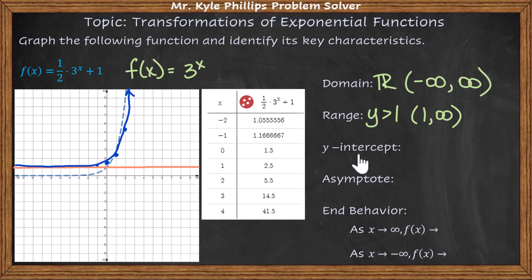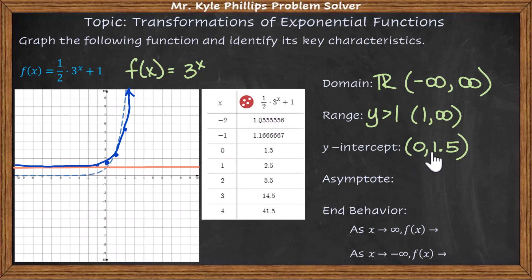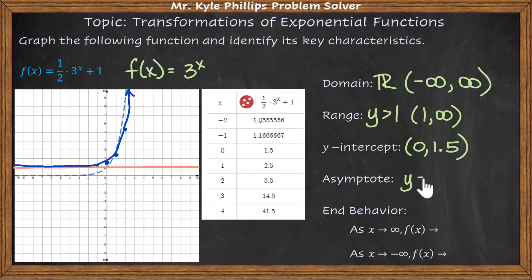Your y-intercept is anytime the x value is 0, so that's going to be 1.5. Please make sure when you're doing your y-intercept, you are writing this as a coordinate point — you must include x is 0, y is 1.5, in parentheses, because we are looking for a coordinate point. Our asymptote — one neat trick with exponentials: whatever this last number is, your k value in standard form, is always going to be your asymptote. So here it is going to be y equals 1. The asymptote is always written as an equation — if it's a horizontal line, we say y equals; if it is a vertical asymptote, we say x equals.